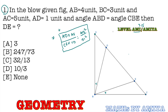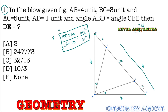We need to find the value of DE. Assume DE is X. AD given is 1, AB is 4 units, BC is 3 units, and total AC is 5 units. So this line DC is 4 because 1 plus 4 is 5. Therefore CE is 4 minus X.